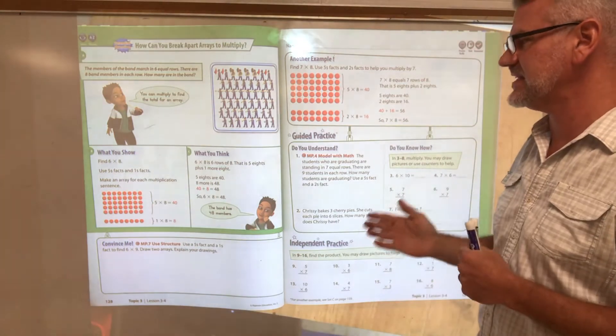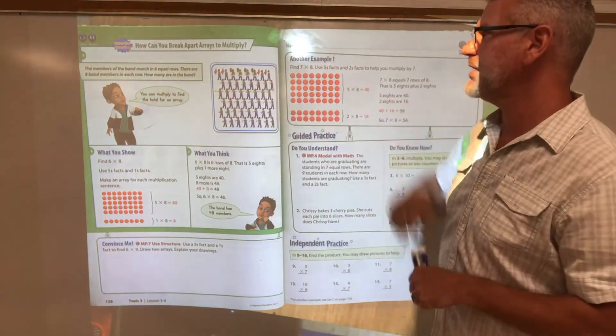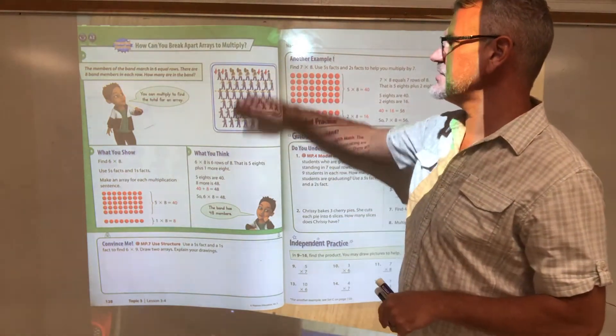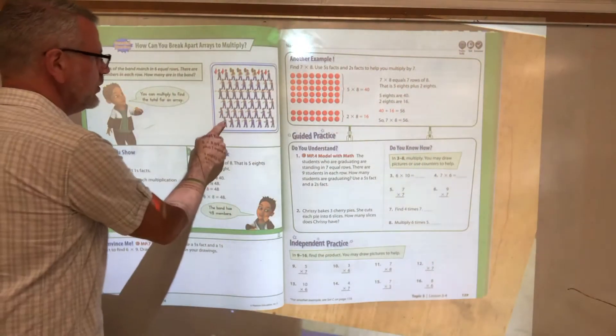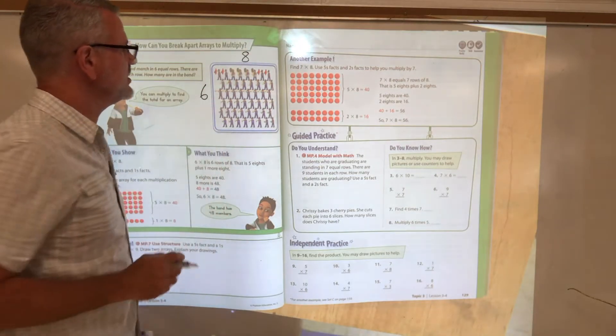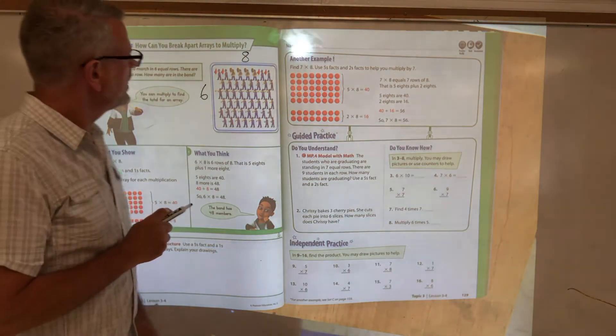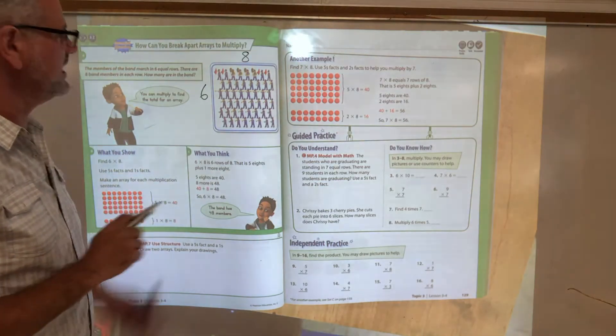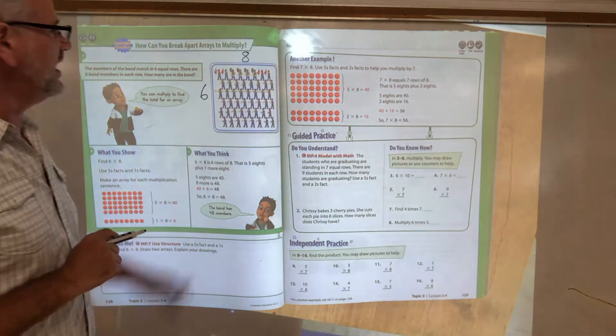Today we're going to look at sixes and sevens. We're on page 128. You see a marching band here, and there are eight band members in each row. How many rows? We need to figure that out. One, two, three, four, five, six rows. And there's eight guys and girls in each row.